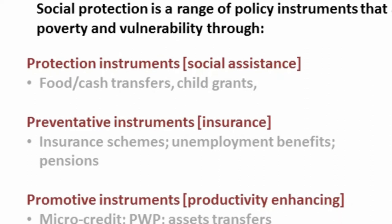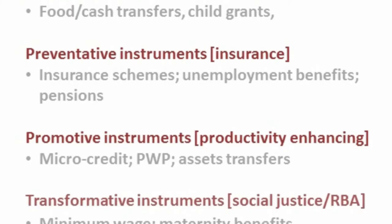The third is a promotion aspect — promotive instruments, which is more recent to the agenda. The idea that it's not just a handout but actually supporting people's productive livelihoods. Examples include public works programmes, microcredits and microfinance — which is contentious as to whether it's social protection — and asset transfers as a way to enhance livelihoods.